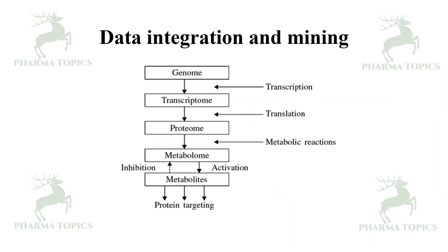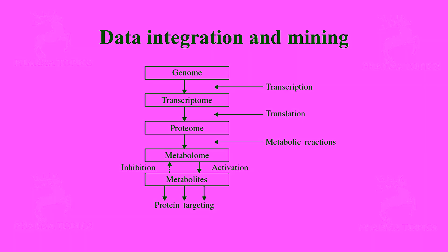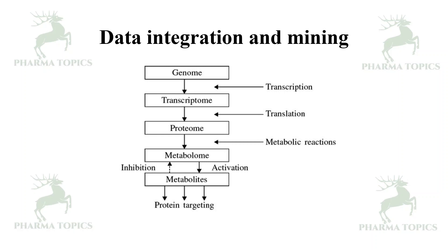From this diagram we can see that genomes are identified in genomic analysis, then transcribed to the transcriptome where transcription data is obtained, then translated to proteins where proteomics data is gathered. These are then converted into metabolites, providing metabolomics data. Some metabolites can be targeted by small molecular drugs. This integration of huge data at each step is handled by bioinformatics to find and validate targets.